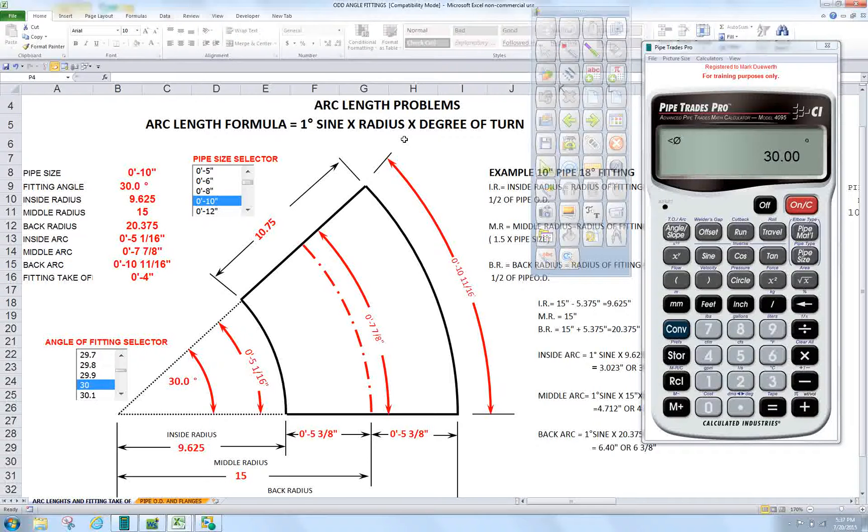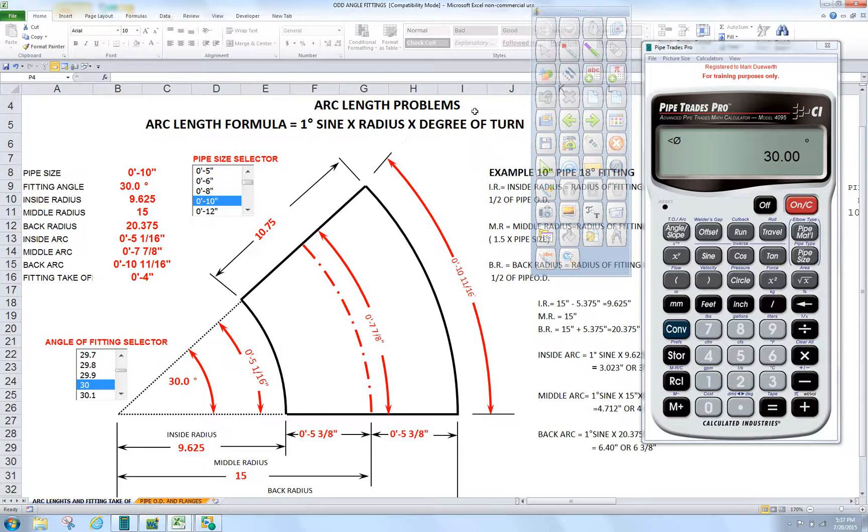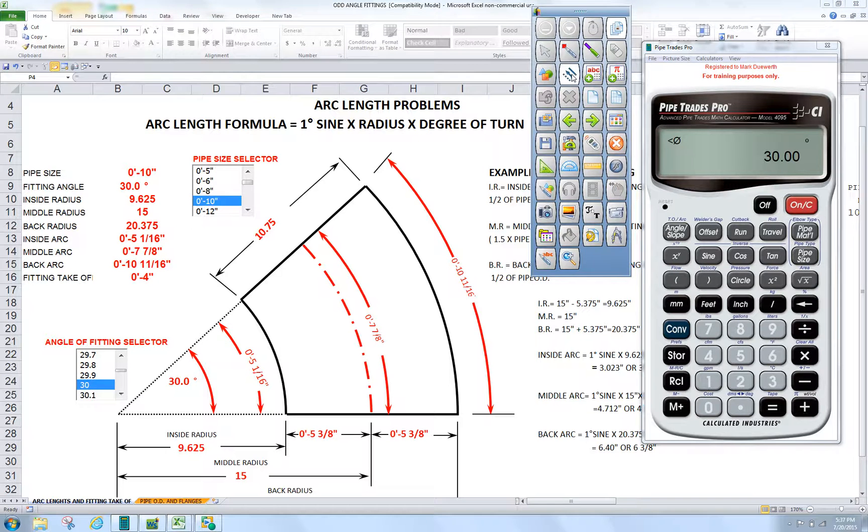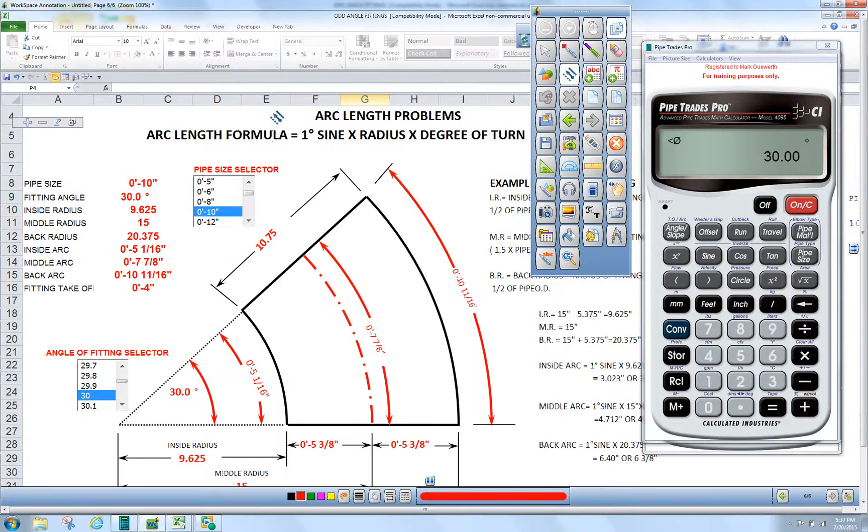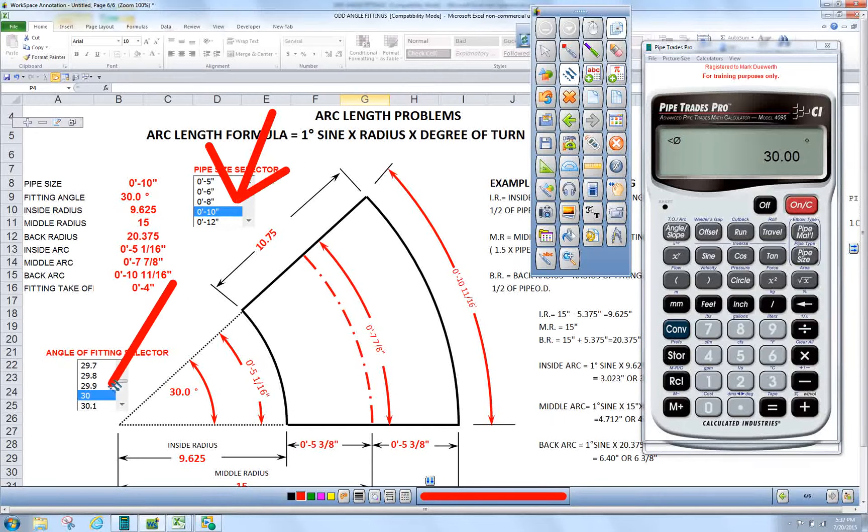How are you doing today? Welcome to Moe's Math. Today we're going to use the Pipe Trades Pro Calculator to come up with fitting takeoff. We have our worksheet here. We have 10 inch pipe. Our angle turn is going to be at 30.